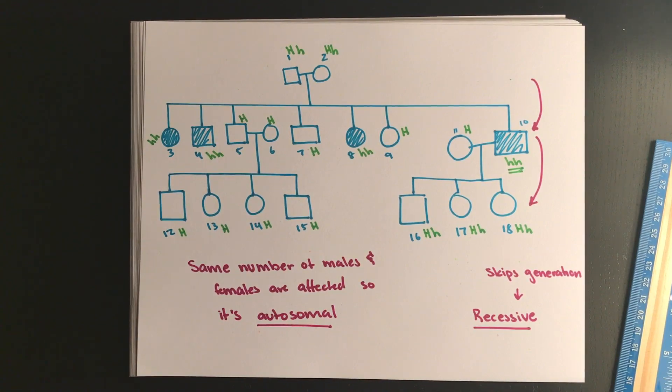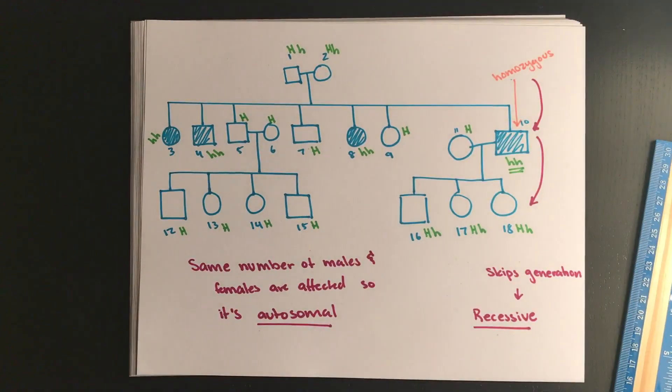As well, you know that all of the other organisms that are affected are homozygous recessive, meaning that their parents must have been carriers. And lastly, you know that any unaffected individual has to carry at least one dominant allele.